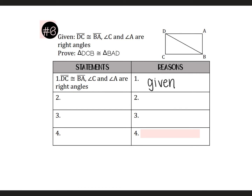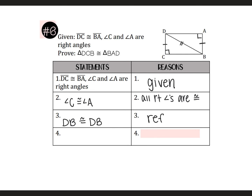For proof number six, the first reason is given. I mark DC and BA with one mark, and angle C and angle A are right angles. Since C and A are right angles, they're congruent because all right angles are congruent. Next I have the reflexive line — DB is congruent to itself because of reflexive. Now I've got three sides and/or angles marked on each triangle, so the triangles are congruent. I have a right angle, a hypotenuse, and a leg, so this would be HL.